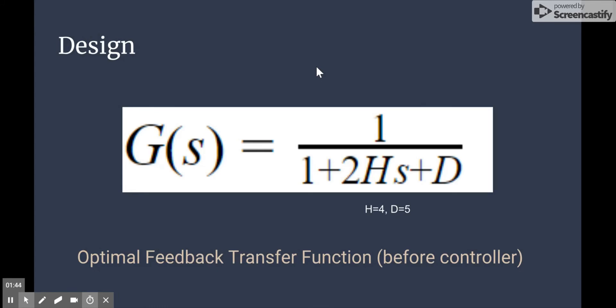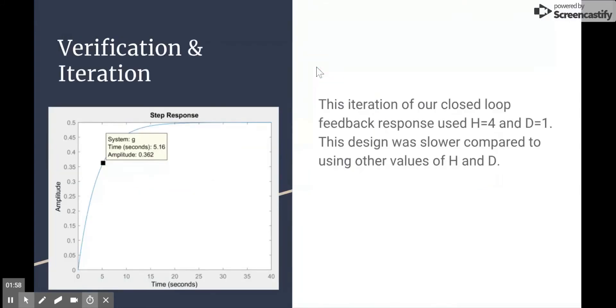Now we have our closed loop feedback transfer function. This transfer function does not yet include the controller, but we thought it would be important to analyze our system without the controller to see how fast it was responding. As you can see, the system responded relatively fast, with a rise time of approximately 5.16 seconds. This is when we chose the parameters H and D equal to 4 and 1 respectively. This did not meet our rise time goal, so we decided to modify our system before moving on to the controller.